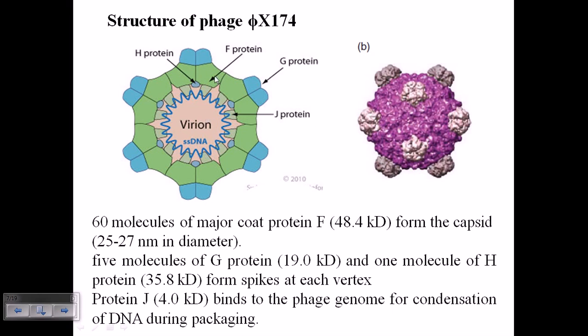It is made up majorly with protein F as the major structural coat protein. It also requires protein G and protein H in very few amounts to construct what we call spikes, which help the phage attach to host cell membrane receptors and then be engulfed inside.